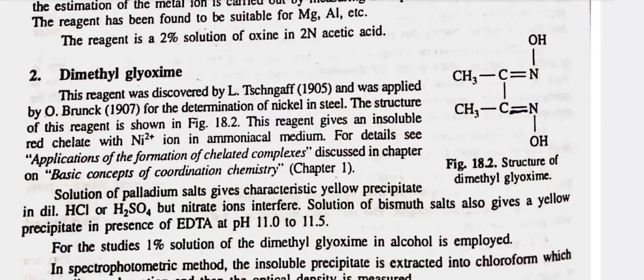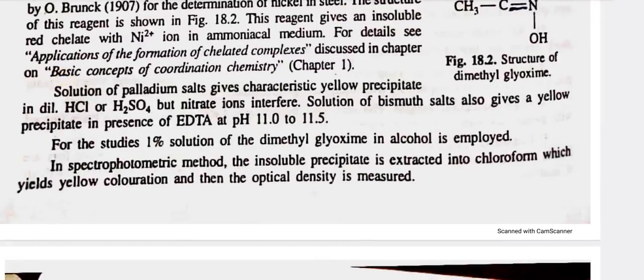Second, dimethylglyoxime — this reagent was discovered by L. Tschugaev in 1905 and was applied by O. Brunck in 1907 for the determination of nickel in steel. The structure of this reagent is shown in figure 18.2. This reagent gives an insoluble red chelate with nickel-2-positive ion in ammoniacal medium. Solution of palladium salts gives a characteristic yellow precipitate in dilute HCl or H2SO4, but nitrate ions interfere. Solution of bismuth salts also gives a yellow precipitate in presence of EDTA at pH 11.0 to 11.5. For studies, 1% solution of dimethylglyoxime in alcohol is employed. In spectrophotometric method, the insoluble precipitate is extracted into chloroform, which yields yellow coloration and then the optical density is measured.